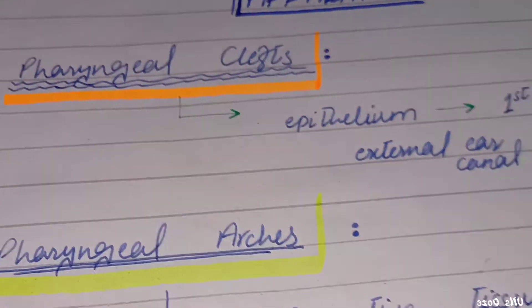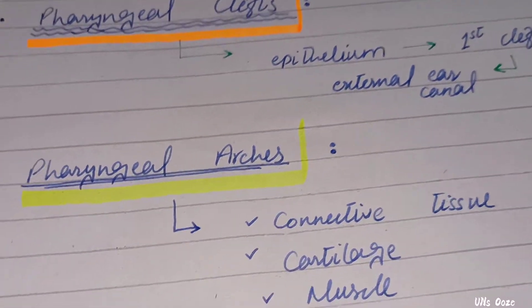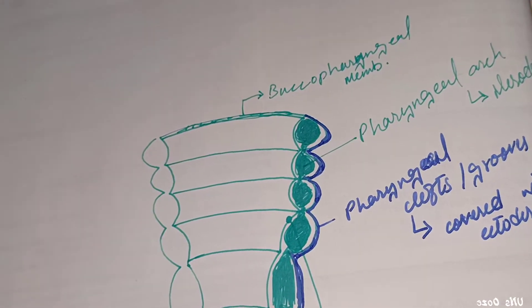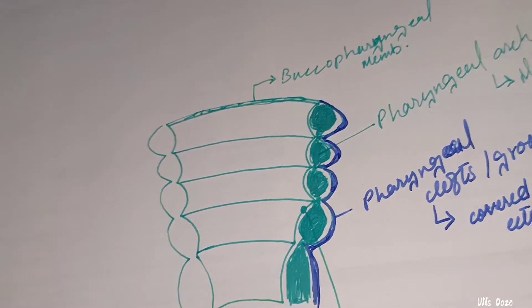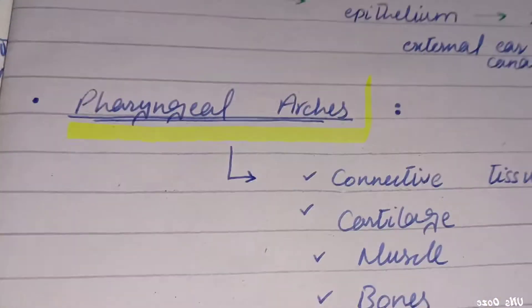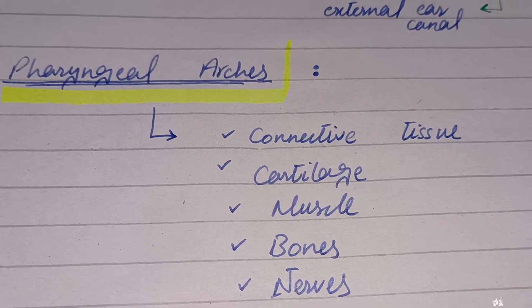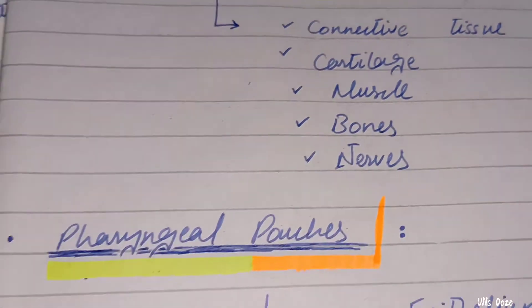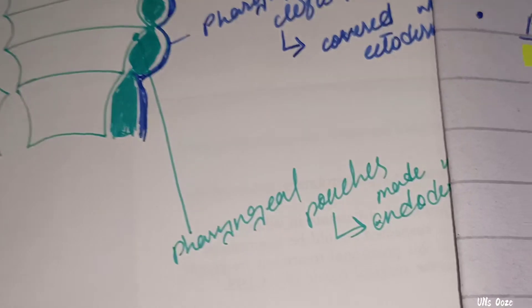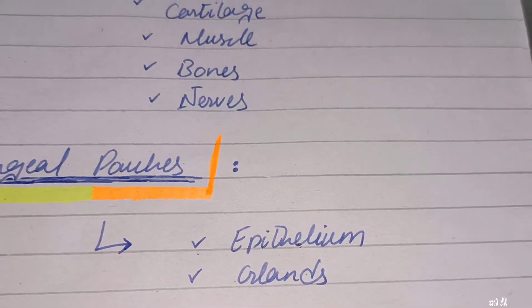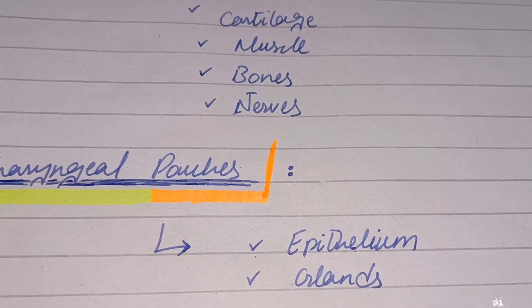Next are the pharyngeal arches. The pharyngeal arches — shown in green inside — will give rise to connective tissue, cartilage, bone, and nerves. The pharyngeal pouches will give rise to epithelium and glands. Let's now see in detail.